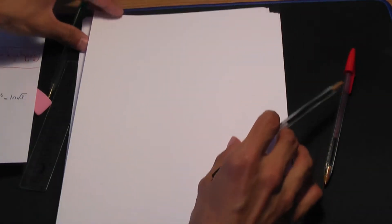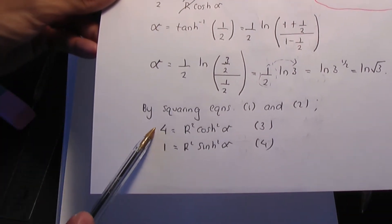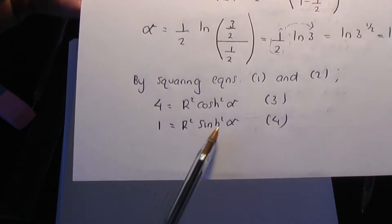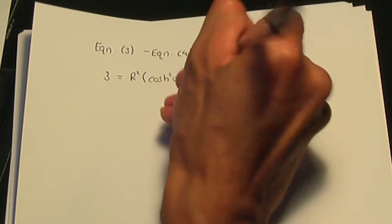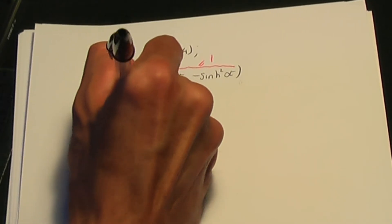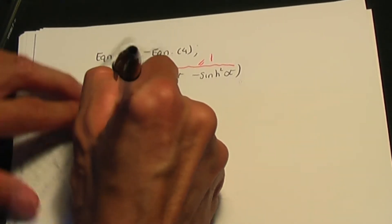Calculating equation 3 minus equation 4: on the left, 4 − 1 = 3. On the right, r²(hyperbolic cos² alpha − hyperbolic sin² alpha) = r² · 1 by Osborne's rule. So r² = 3, giving r = √3.